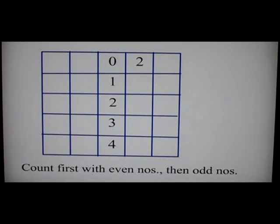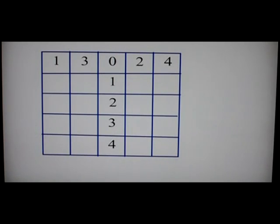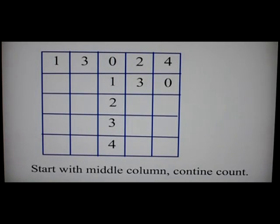We first start off by writing the numbers starting from 0 to 4 down the middle column, and then we start writing the numbers 0, 2, 4, 1, 3 and we keep cycling that as we go from row to row.